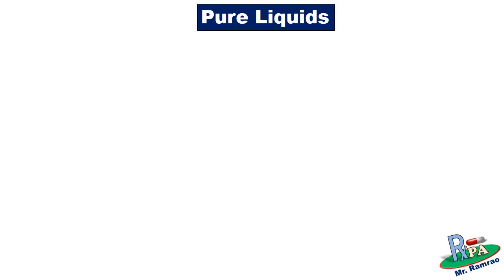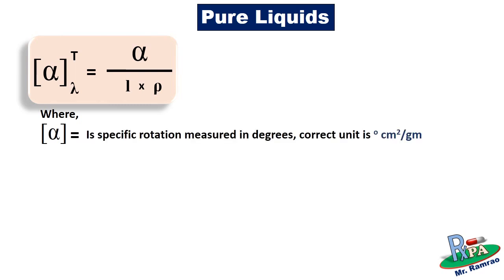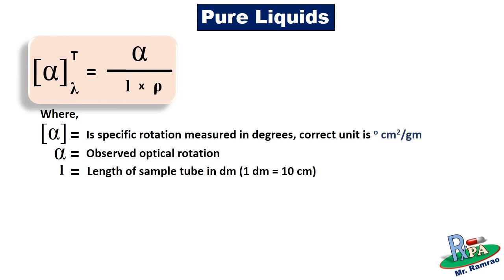If the question asks you to calculate specific rotation of a pure liquid, then you will be provided with the density. At that time you have to use this formula, where alpha in square brackets is the specific rotation measured in degrees — the correct unit is degree centimeter square per gram. Alpha is the observed optical rotation, and L is the length of the sample tube measured in decimeters. One decimeter is equal to 10 centimeters. If the length of the tube is given in centimeters, convert it into decimeters by dividing the centimeter value by 10.